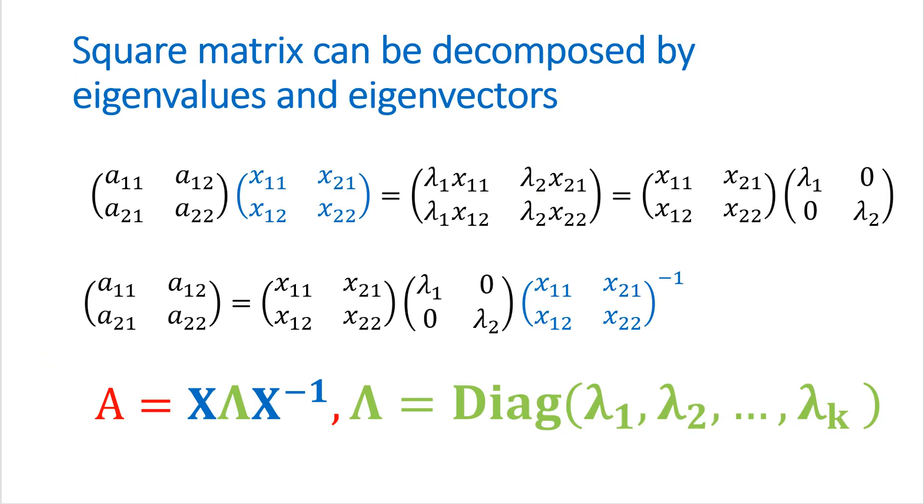So it means that square matrix can be decomposed by eigenvalues and eigenvectors, like this form. So A equals to x multiplied by lambda diagonal matrix multiplied by inverse of x matrix.